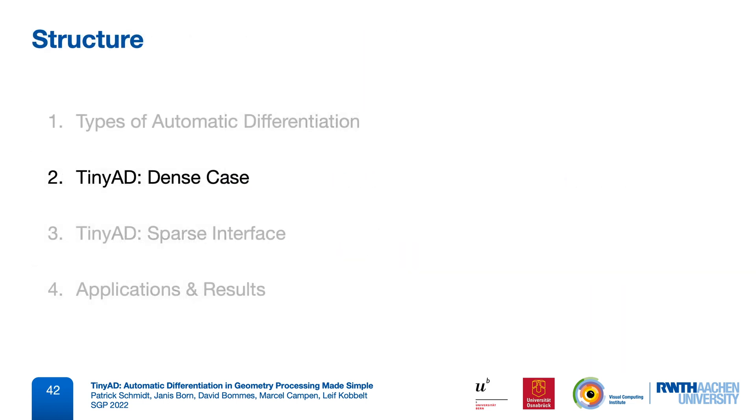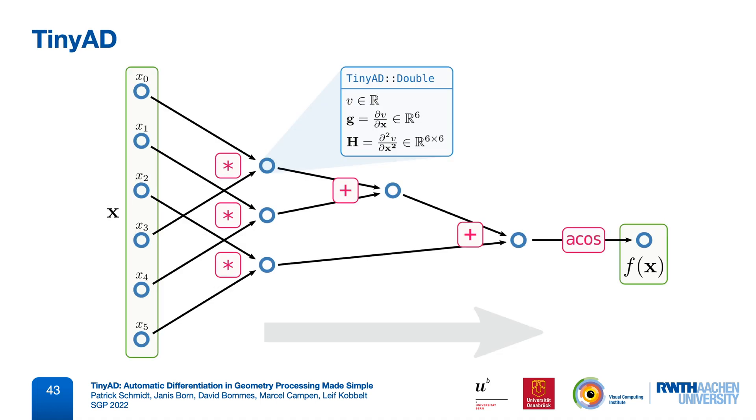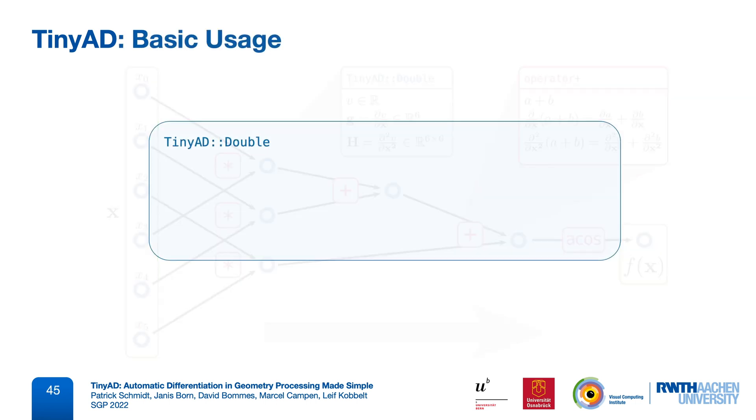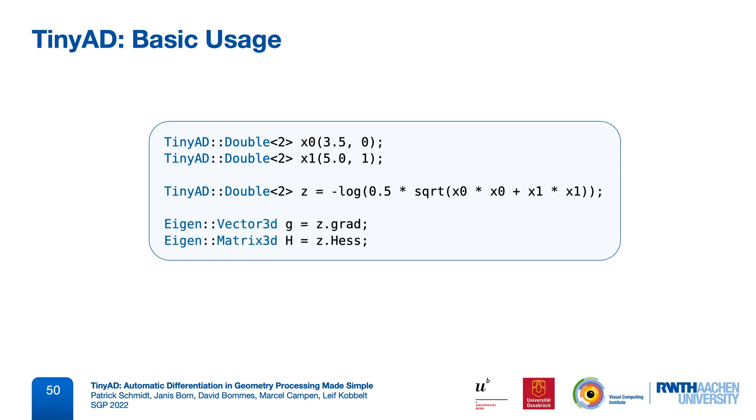Let's look at TinyAD for small and dense problems first. All we have to do for compile-time differentiation in forward mode is to provide a scalar data type that carries derivatives, and then overload operations with differentiation rules. We implemented this in the type TinyAD double. It receives the dimensionality of our problem as a template argument, and its constructor takes a value and the index of that variable. Here we construct a second variable and can then perform any computations using the set of available operations. We can always query the derivatives of any TinyAD double, and these derivatives are stored as Eigen matrices.